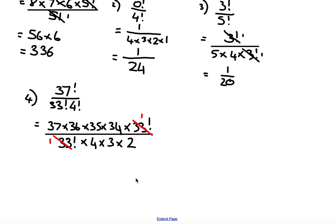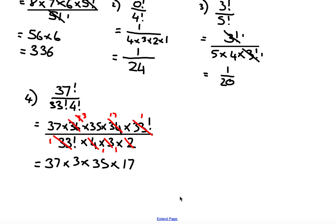Now I simplify the remaining factors. I divide 36 by 4 to get 9, and 1 in the denominator. I divide 9 by 3 to get 3, removing that factor from the denominator. I divide 34 by 2 to get 17, removing the 2 from the denominator. The denominator is now just 1, leaving the calculation as 37 multiplied by 3 multiplied by 35 multiplied by 17.